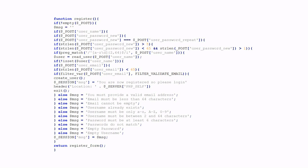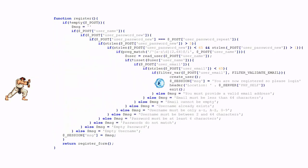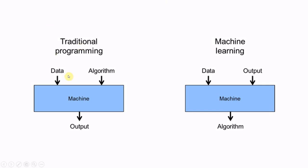I like this meme — it explains what happens when the number of rules increases. It just checks username and password. In traditional programming, we fit data and an algorithm — in other words, decision rules — and the program returns an output. For example, we fit a username and password validation algorithm and it will check the input data and return true or false. On the other hand, in machine learning, I fit data and output, and the machine learning algorithm creates the decision rules — instead of adding new rules to classify apple and orange, I fit apple and orange images and label them.